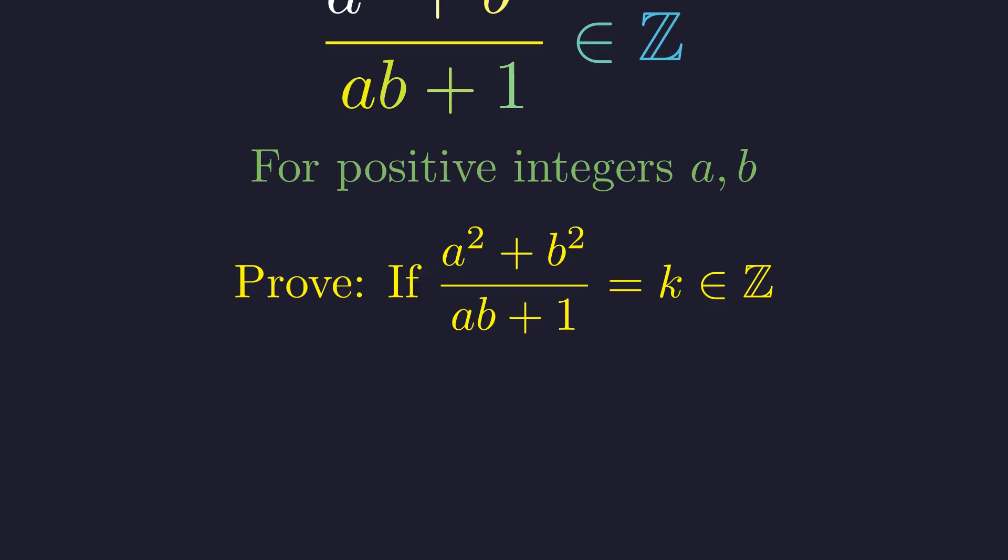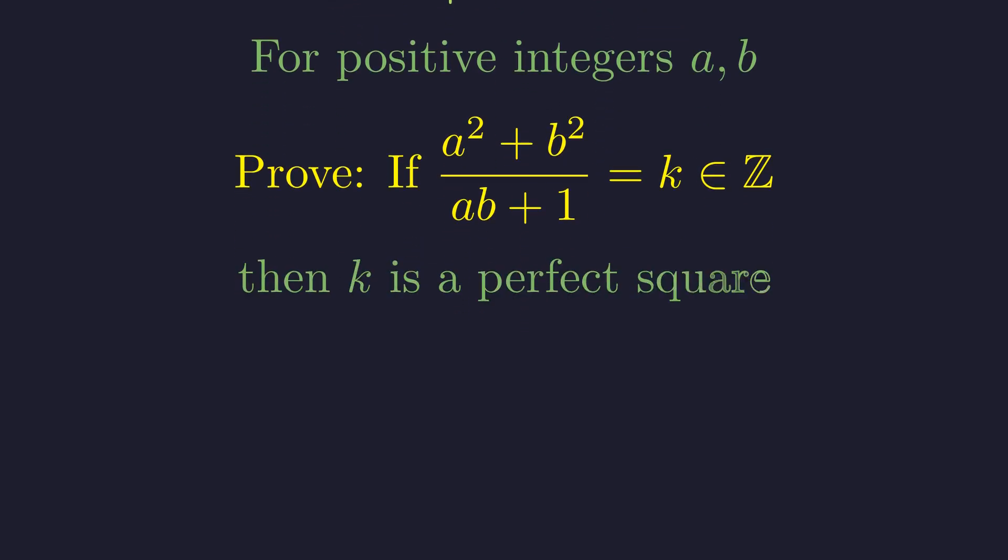Our goal is to prove that whenever this expression equals an integer k, that integer k must be a perfect square. This is a surprisingly deep result that connects algebra, number theory, and proof technique in an elegant way.